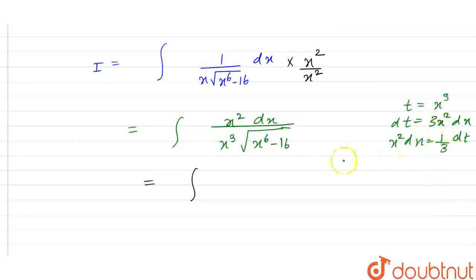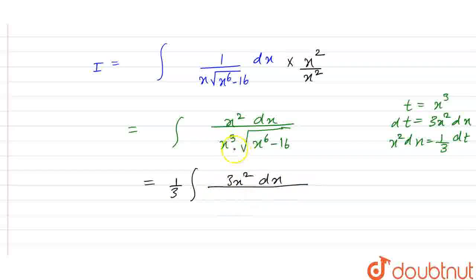We have 1 by 3 and 3x square as it is dx and in denominator we have here will be x cube under root of x cube whole square minus 4 whole square here.